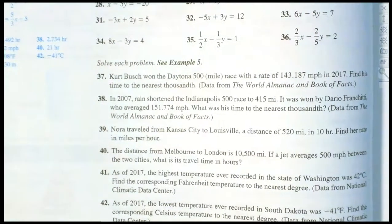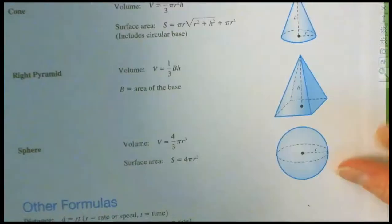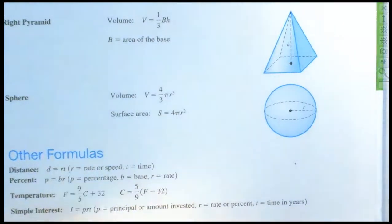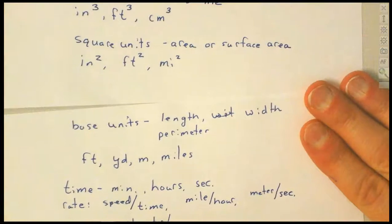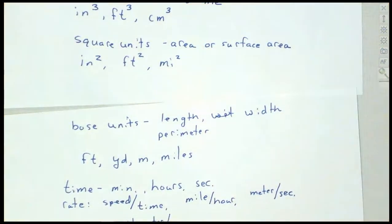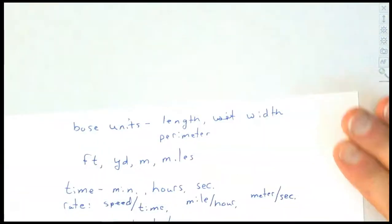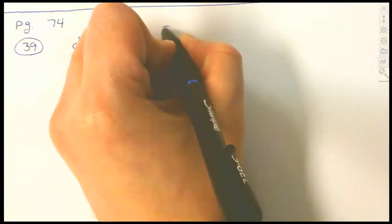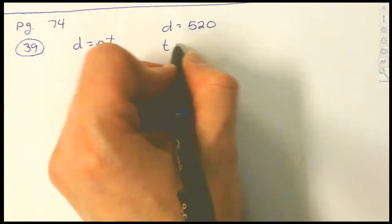What are we looking for? We've got a distance, so we go to the back cover of our textbook. Under other formulas, we have: Distance equals the rate times the time (D = RT). We know the distance is 520, so D = 520. Time is 10 hours, so T = 10. What are we missing? We don't know R.